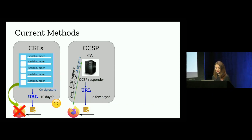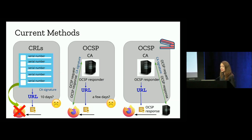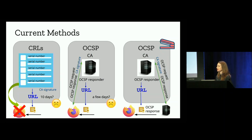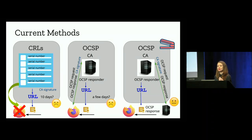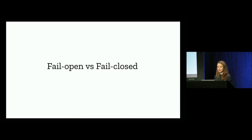Up until now, the client is doing a lot of the hard work for revocation checking. But what if we shift this work to the server? This is what happens in OCSP stapling — the server is responsible for sending an OCSP request to an OCSP responder, receiving the response, and stapling it or attaching it to the certificate it is going to serve. This is a bit better: it addresses latency and privacy concerns. But it's not quite perfect, because an attacker can easily strip off an OCSP response and fail open their way to victory.